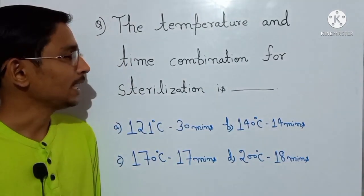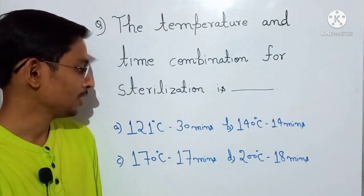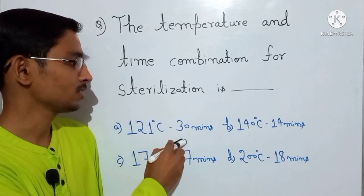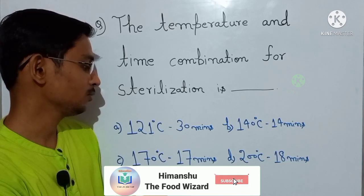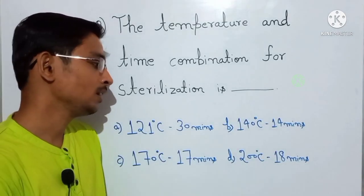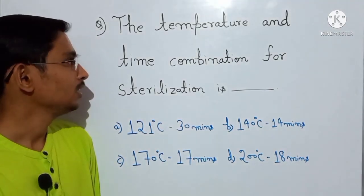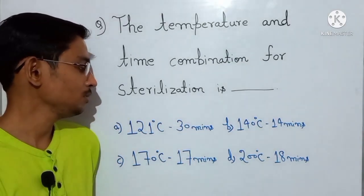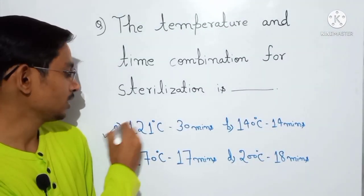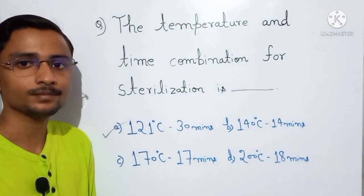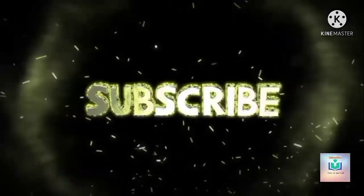The second question: 'The temperature and time combination for sterilization is — (a) 121 degrees Celsius for 30 minutes, (b) 140 degrees Celsius for 14 minutes, (c) 170 degrees Celsius for 17 minutes, or (d) 200 degrees Celsius for 18 minutes?' As we just studied, sterilization is usually performed at 121 degrees Celsius for 30 minutes, so option A is the correct answer.